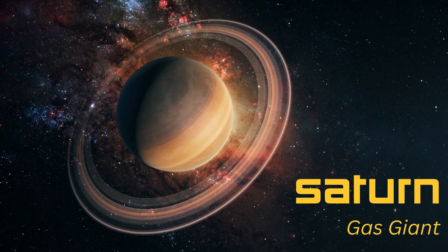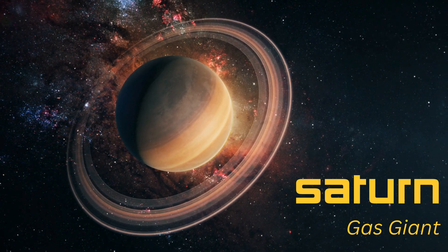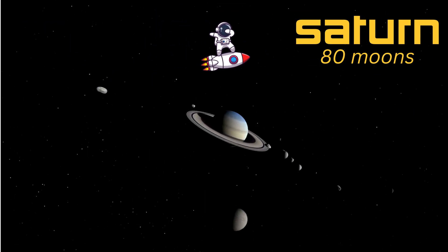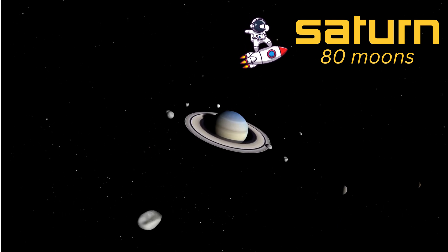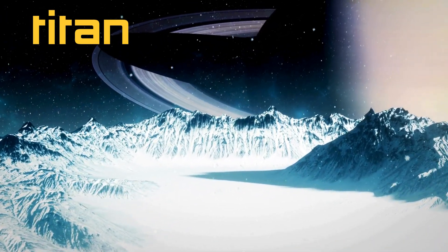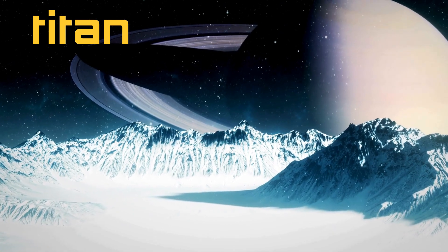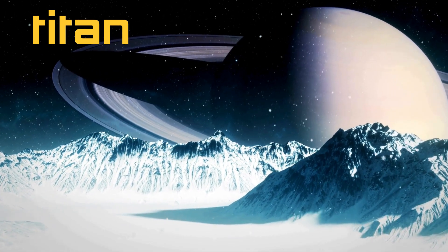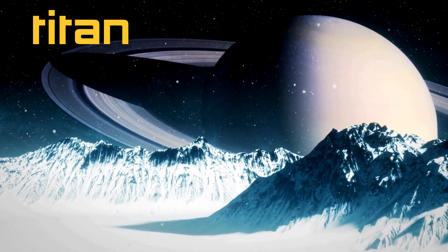Saturn is also a gas giant like Jupiter, and it's mostly made of hydrogen and helium. Saturn has more than 80 moons, and one of them, Titan, is bigger than the planet Mercury. It even has rivers and lakes of liquid methane. Wouldn't that be a cool place to explore?